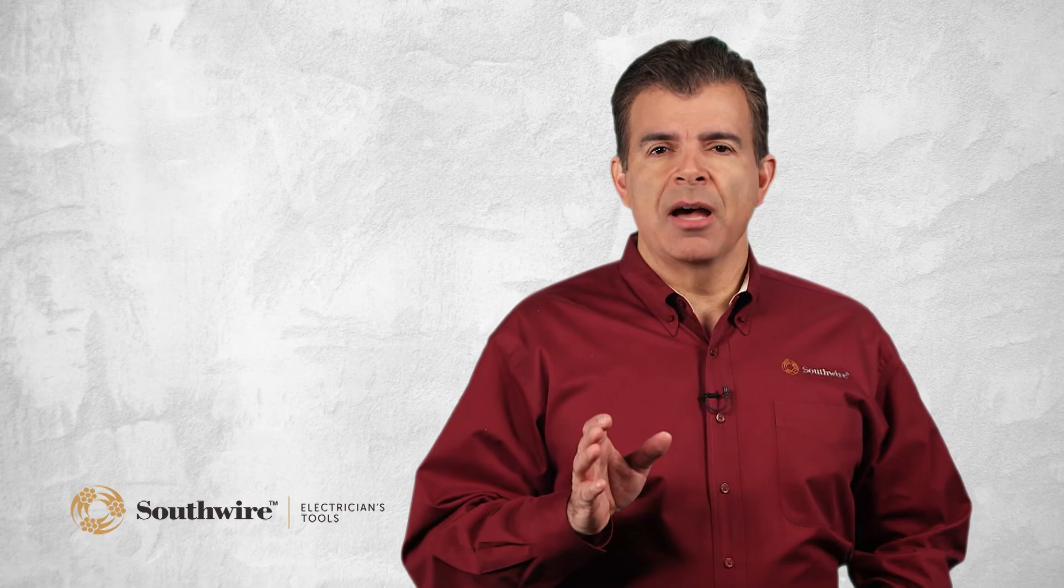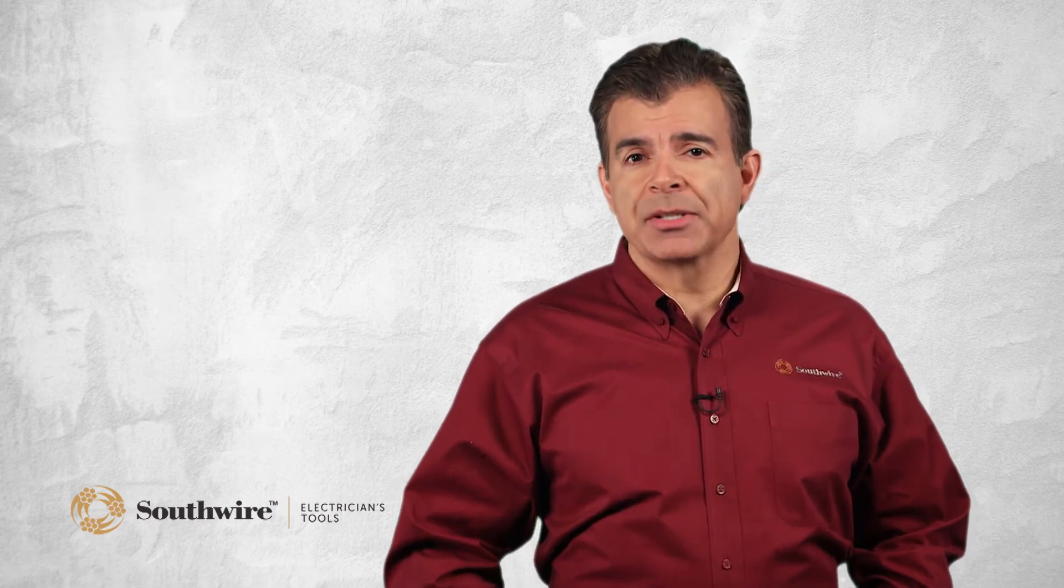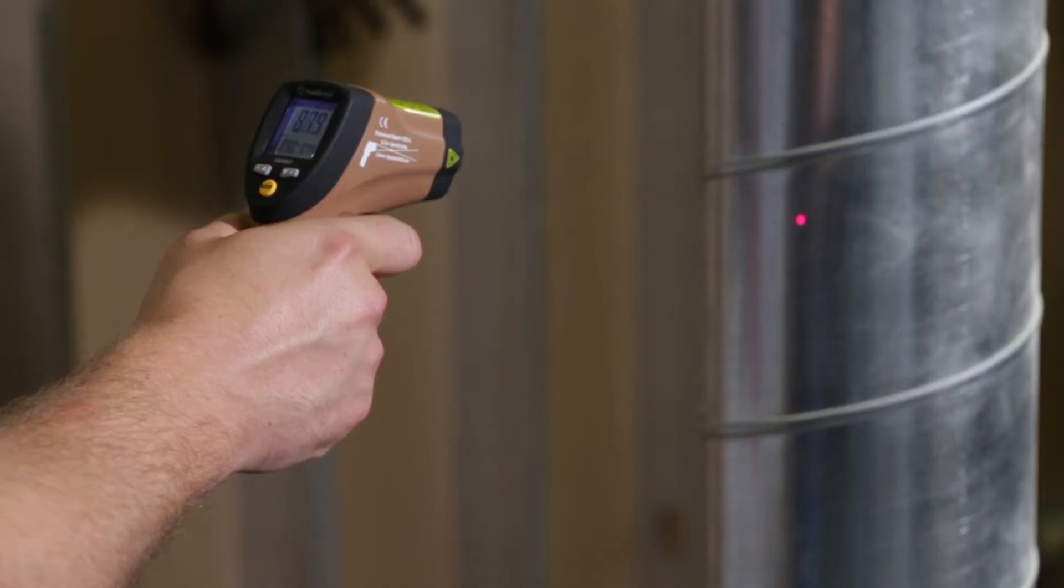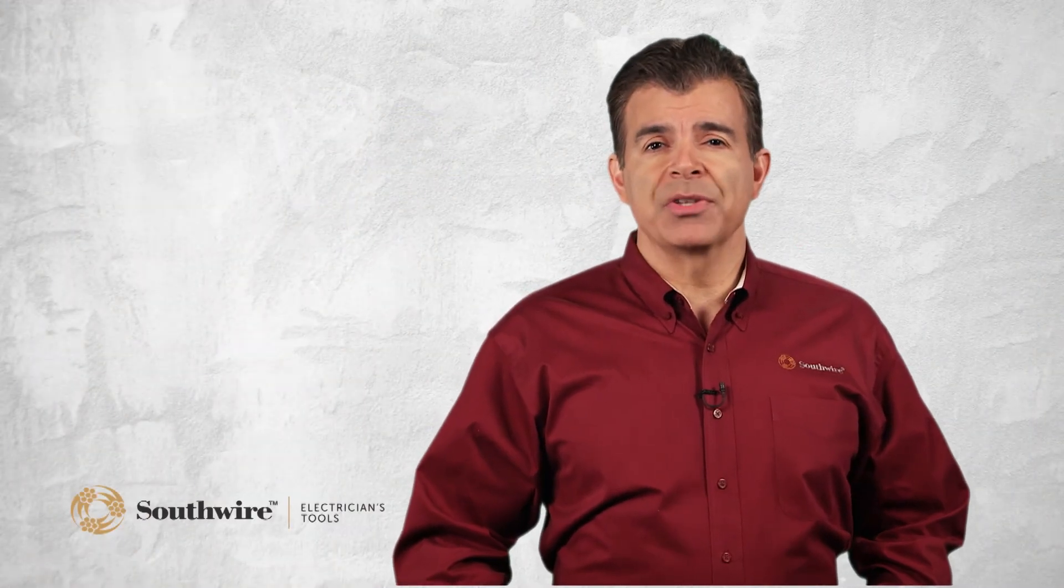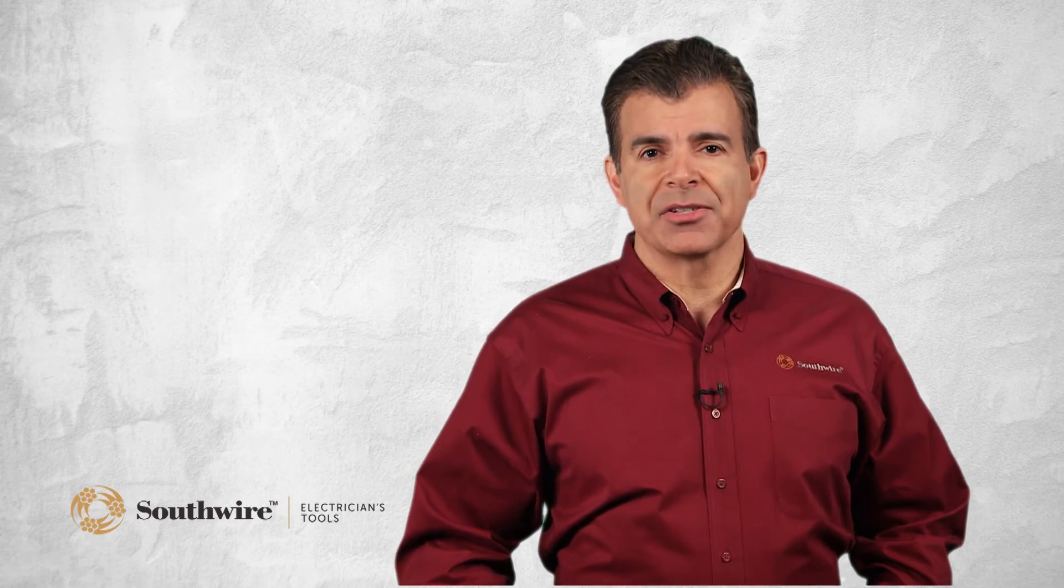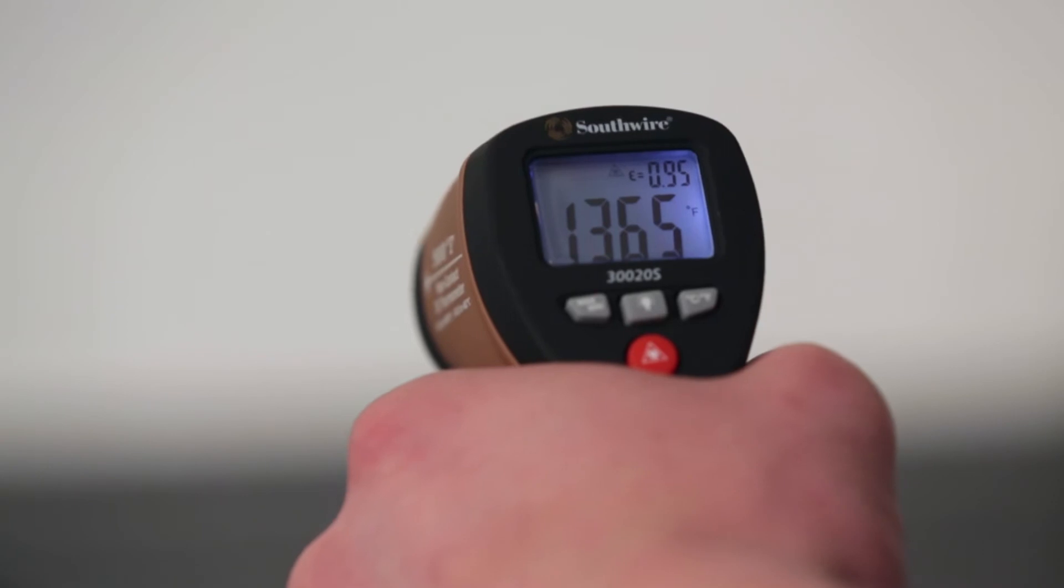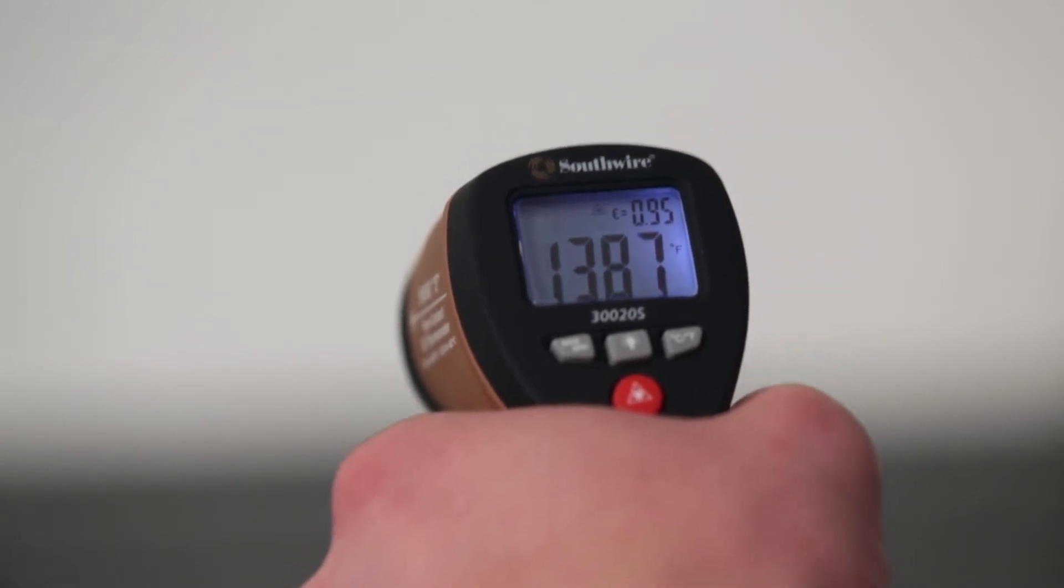Adjustable emissivity compensates for errors when measuring objects that are reflective. This is primarily used when measuring temperature on unpainted metal like conduit. Response rate is important when scanning an area for temperature spikes. Simply put, the faster the response rate, the more accurately the IR thermometer will show hot or cold spots.